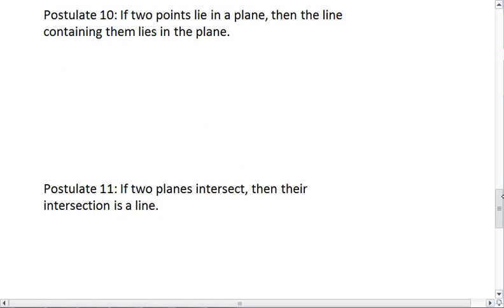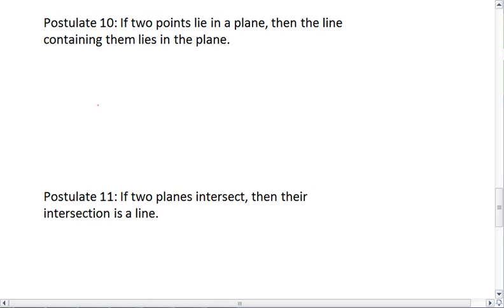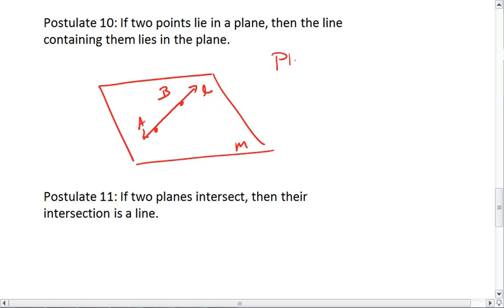Let's look then at postulate 10. Postulate 10 tells me if I have a plane and two points within that plane, we can imagine having a piece of paper as our plane and drawing two points on it. The line that connects those points must also lie in the plane. So plane M contains points A and B. This means that then plane M contains line AB.